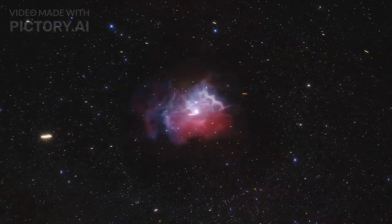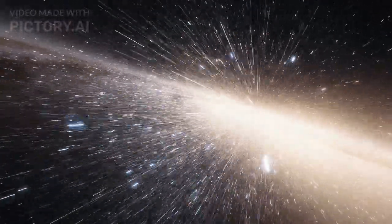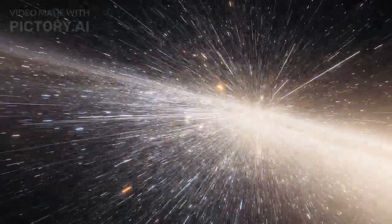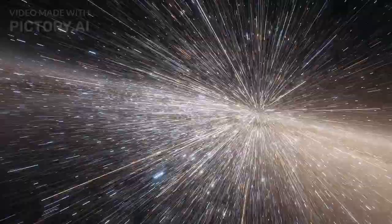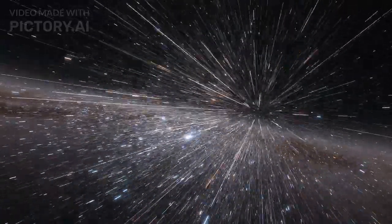Number 3. Messier 31, the Andromeda Galaxy, also known as M31 and NGC 224, and originally the Andromeda Nebula, is a barred spiral galaxy with the diameter of about 152,000 light-years across.